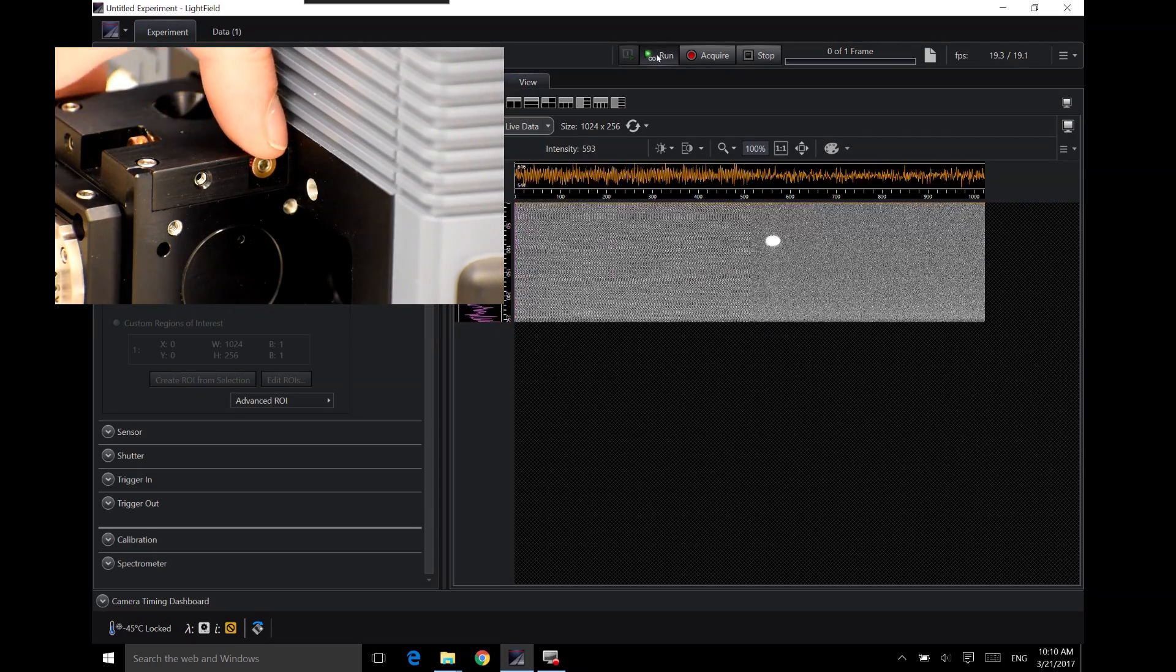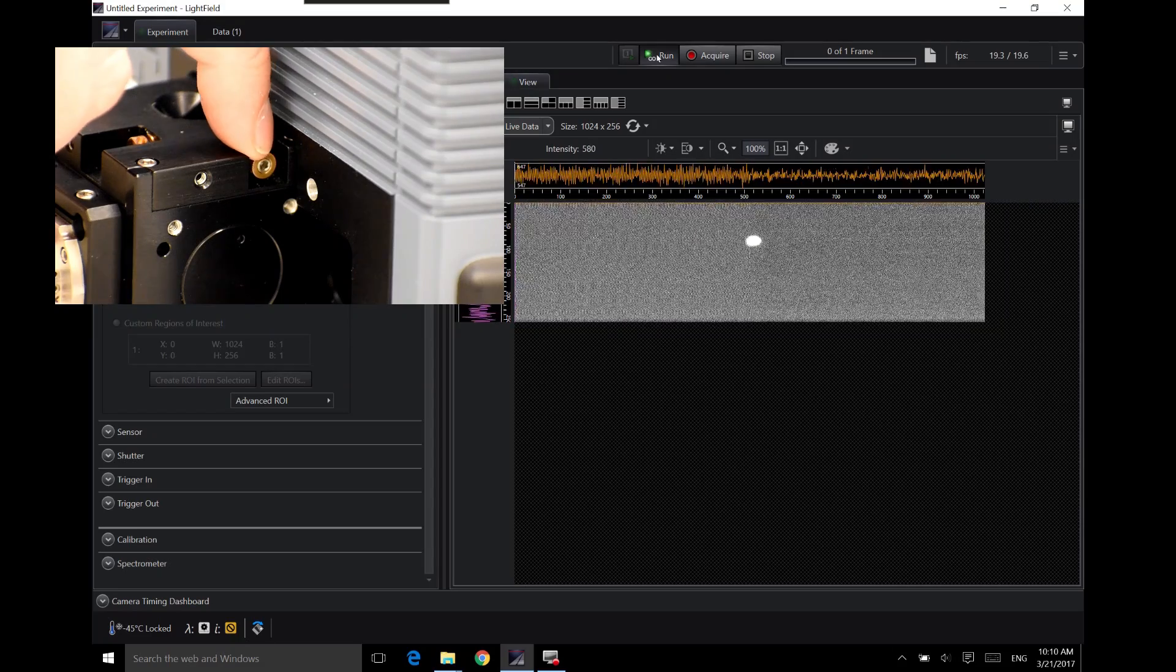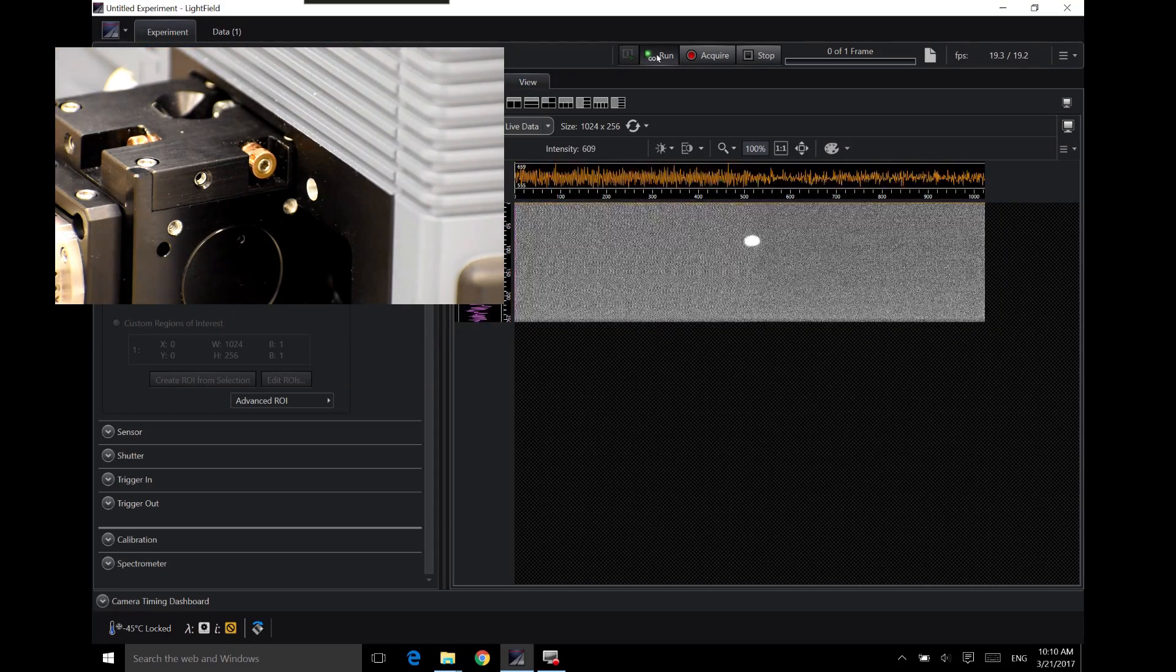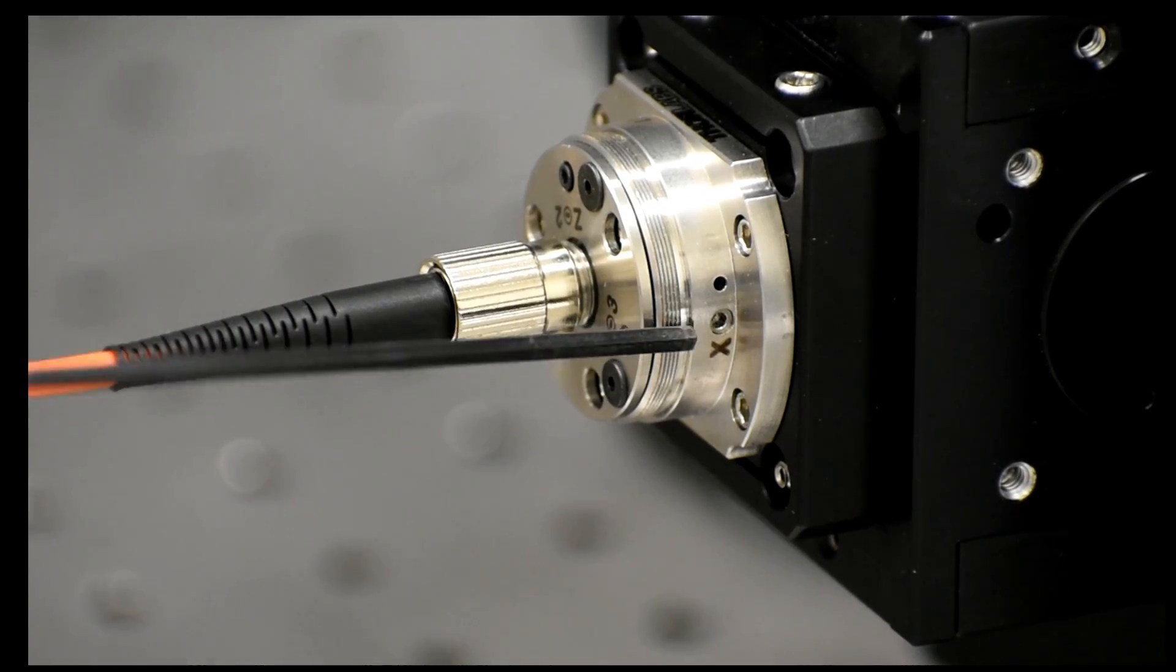Use the adjustment on the focus cube to align the fiber output with the entrance slit in the center of the sensor. There might be additional adjustments on the fiber coupler as well.